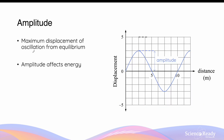Amplitude refers to the maximum displacement of oscillation from the equilibrium position of the particle or of the field. Typically, when you're graphing a transverse wave on a displacement versus distance graph, the amplitude can be easily determined by finding the distance between the highest point and the equilibrium position from which the wave oscillates. In this case, this corresponds to three squares, which is three units of amplitude.